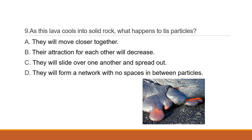Question 9: As this lava cools into solid rock, what happens to its particles? A. They will move closer together. B. Their attraction for each other will decrease. C. They will slide over one another and spread out. D. They will form a network with no spaces in between particles.